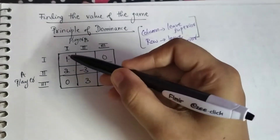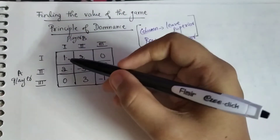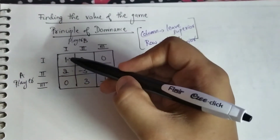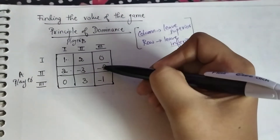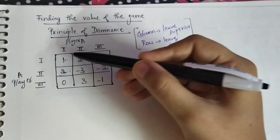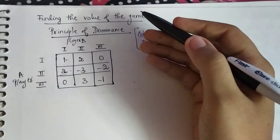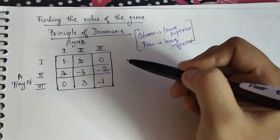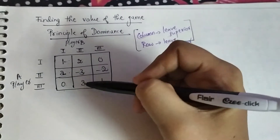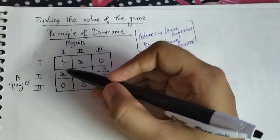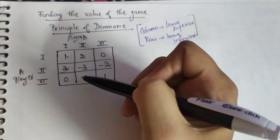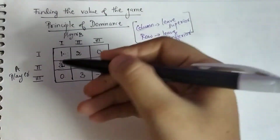Here, one is less than two, but two is greater than minus three, so that doesn't hold good. Whenever you compare two rows, all the values present should satisfy the same inequality — either all less than or all greater than. Here, one is less than two but two is greater than minus three, so you're getting mixed inequalities. That's ruled out. Comparing rows one and three: one is greater than zero but two is less than three, so that doesn't work either. For rows two and three: two is greater than zero but minus three is less than zero, so that condition is not satisfied.